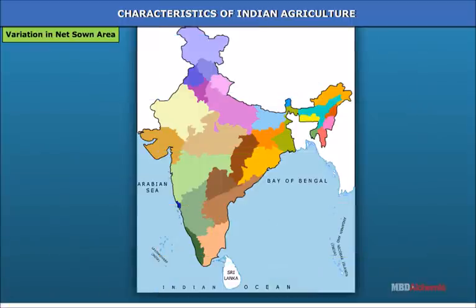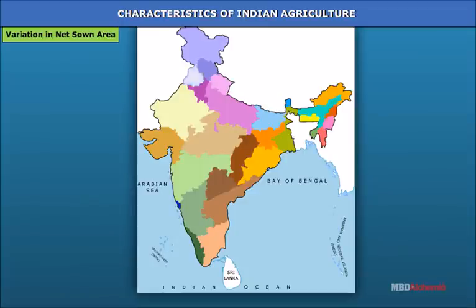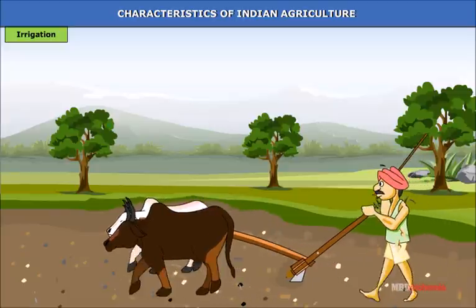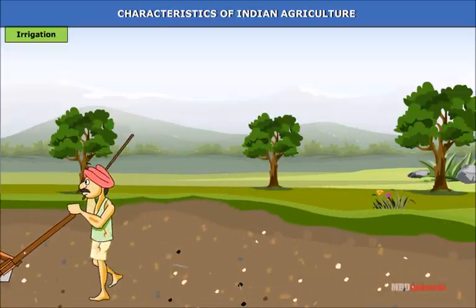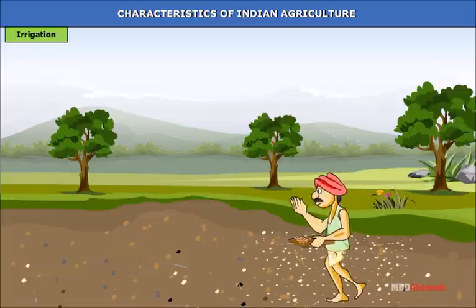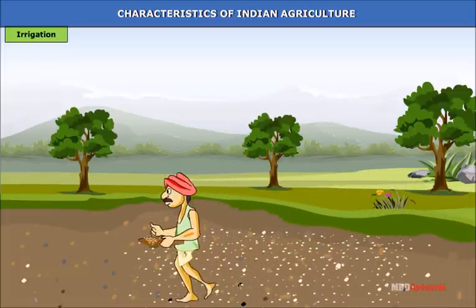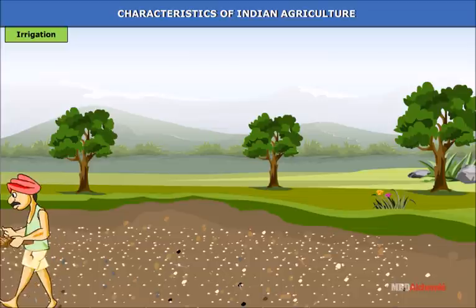Variation in net sown area: The proportion of net sown area to geographical area varies greatly from state to state. It is about 84.2% in Punjab and only 3.4% in Arunachal Pradesh, and it has an inverse relationship with forest cover. Irrigation: Only about one-third of cropped area is actually irrigated. Small farmers in many parts still follow primitive traditional agricultural practices.